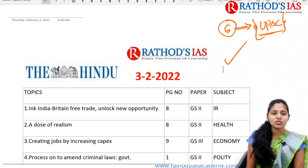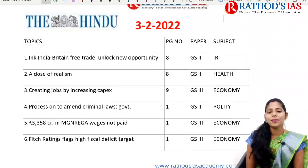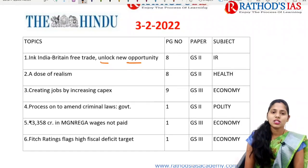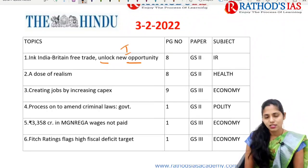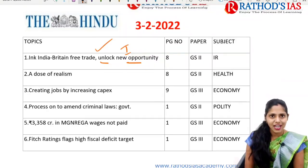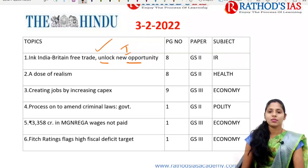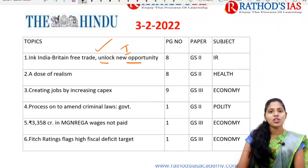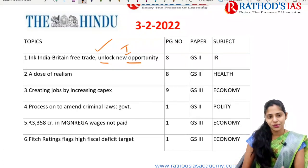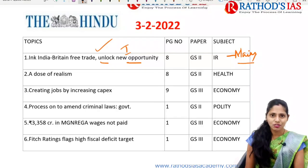The first topic is regarding India-Britain free trade unlocking new opportunities. This article talks about India-Britain, that is United Kingdom (UK), free trade — what is that agreement, what is the significance of that agreement, and what are the challenges. This topic is important from your international relations, which mainly comes under GS Paper 2, and is most important from your Mains, not from Prelims.